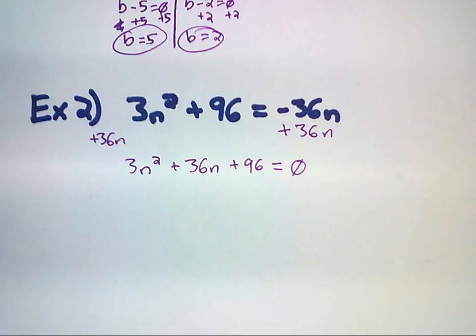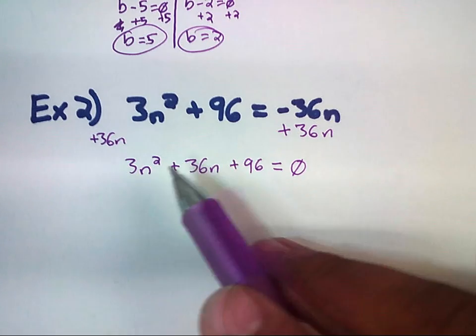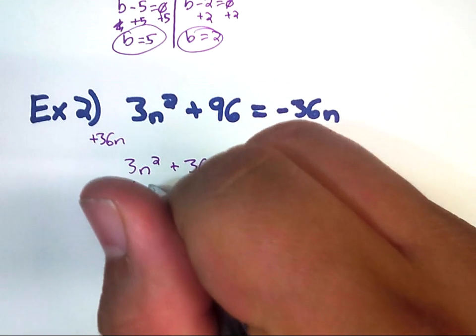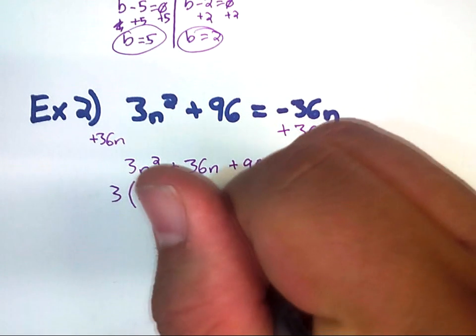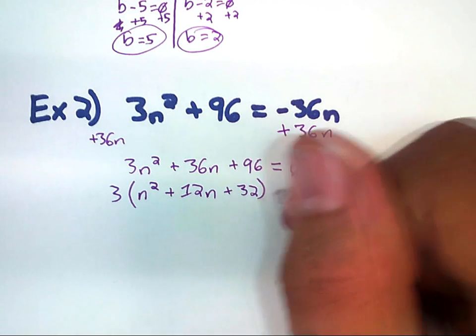Now, we can go ahead and work with this. But it probably, honestly, would be a little bit easier to factor out a 3 from everything first. So, I'm going to go ahead and factor out a 3. So, this becomes 3 times n squared plus 12n plus 32 still equal to 0. That didn't change.